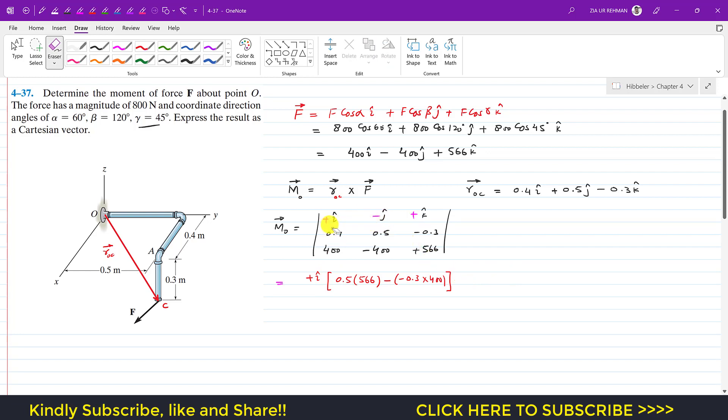And then this will be minus j, minus j, and the determinant of this sub-matrix. So minus j and then 0.4 into 566 minus minus 0.3 into 400. And then plus k, plus k. So 0.4 into minus 400 minus 0.5 into 400.